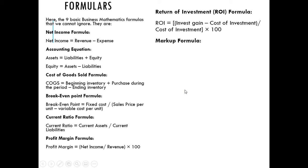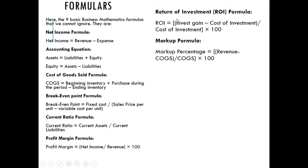The higher the ratio, the better. Markup formula: this gives us the percentage of the gross profit. Revenue minus cost of goods sold, divided by cost of goods sold, times 100 gives us the markup percentage — which is essentially the gross profit ratio. The difference between markup percentage and profit margin is that profit margin is calculated after expenses, while markup percentage is before expenses.